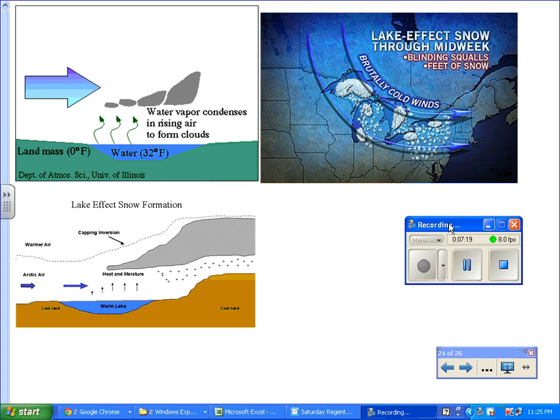If you live around upstate New York near the Great Lakes, you understand the process of lake effect snow. Essentially, during the winter time, you're going to have cold dry air that's going to run across the Great Lakes. If you look at this diagram, the landmass is at zero degrees Fahrenheit, then it goes over water which is about 32 degrees Fahrenheit.